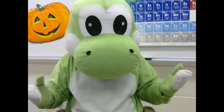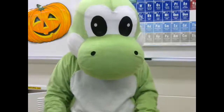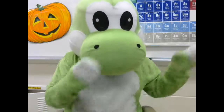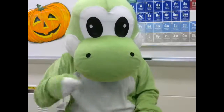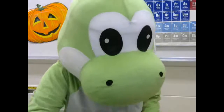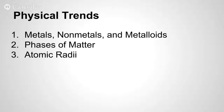Now it's time for the trends. I'm going to split this off into two parts: the physical trends, and then the chemical trends. There are three physical trends in the periodic table that you should know. Number one, metals, non-metals, and metalloids. Number two, phases of matter. And number three, atomic radii. So let's look at them each individually.